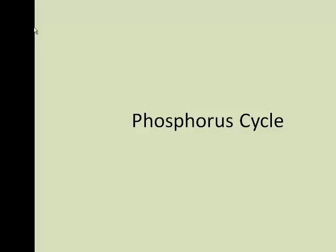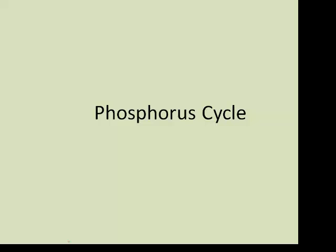This is the third video in a series on cycling of important nutrients. In this video, we're going to look at the phosphorus cycle. Phosphorus is important in living things just as nitrogen and carbon were. The role of phosphorus in the environment is that it's part of the energy-carrying molecule ATP, which stands for adenosine triphosphate.